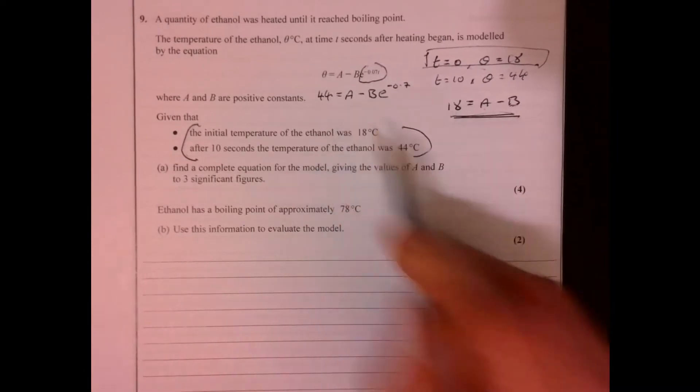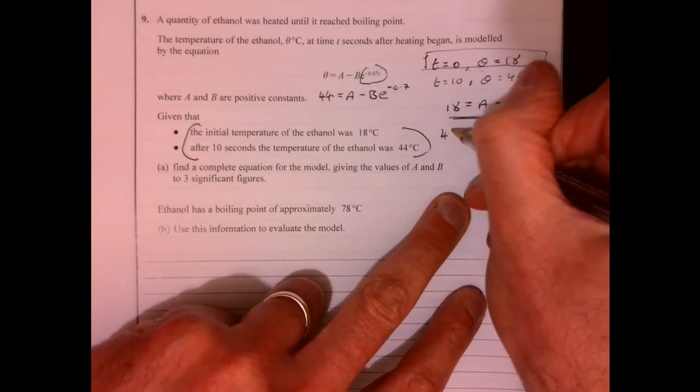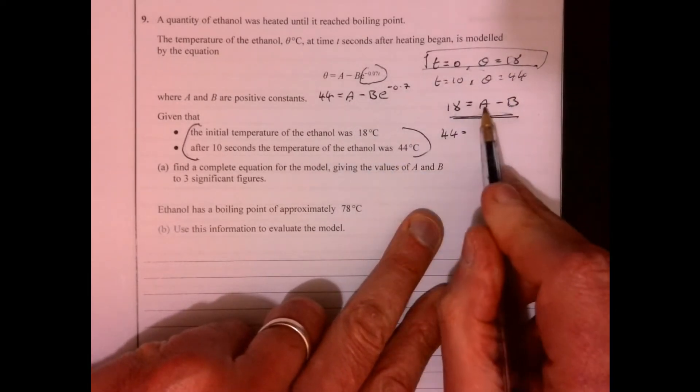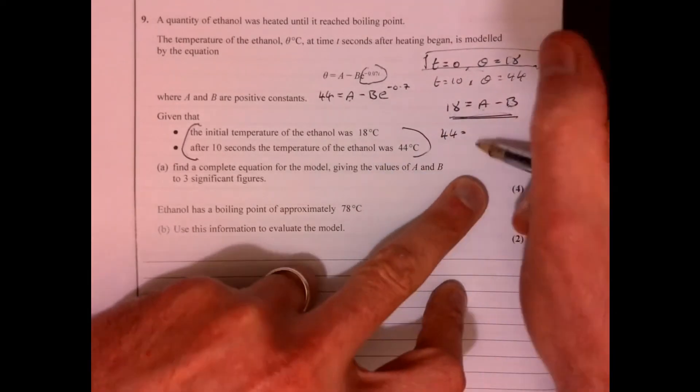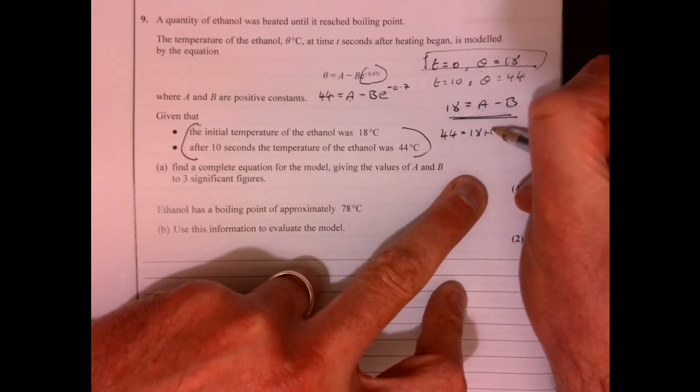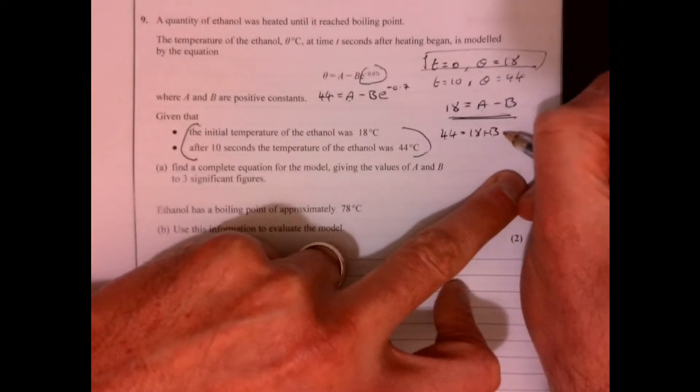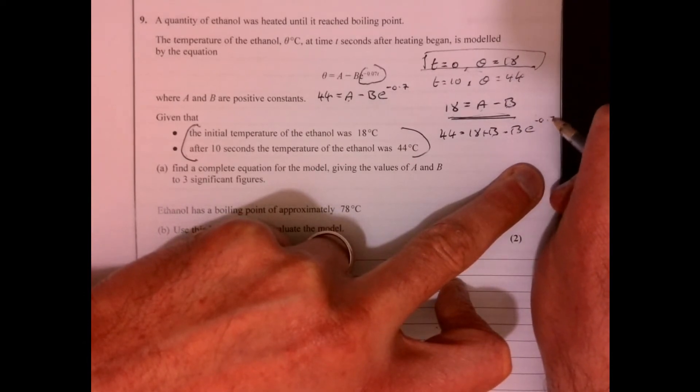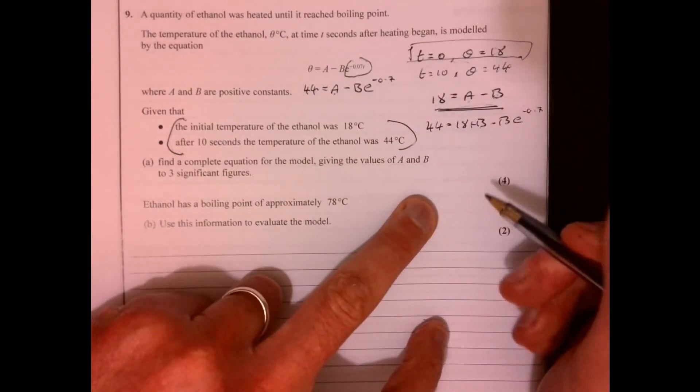So if we just feed that into here, that's going to give me 44 equals, so A equals 18 plus B, 18 plus B, and then we've got take away B, E to the minus 0.7. So that gives us something nice that we can solve.